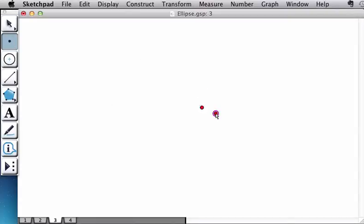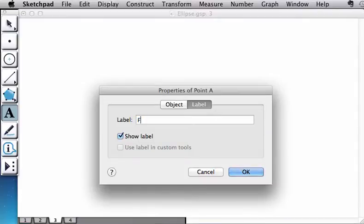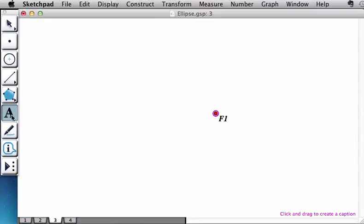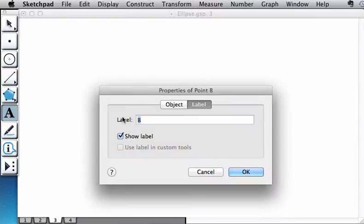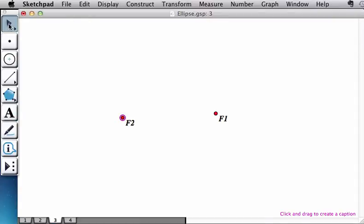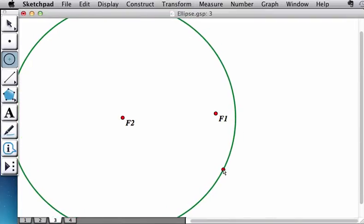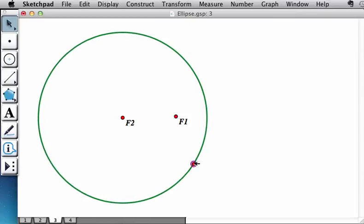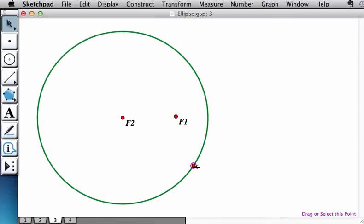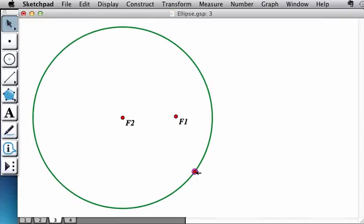We start with a point. I'm going to call this point F1 for the first focus. And then I'm going to have another point, let's call that point F2 for the second focus. And then what I do is I take my circle tool and put a center on the second of the foci that I created. And then I open my circle to be large enough to encompass the first focus. So this is a point which controls the radius of the circle. You'll see in a minute how it's going to be useful.